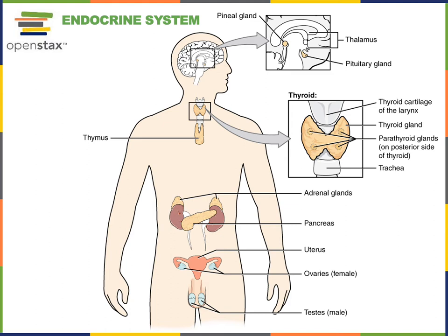Previous videos have covered the hypothalamus, pituitary gland, thyroid, parathyroid glands, and the adrenal glands. This video will focus on the pancreas. The pancreas is located in the epigastric and left hypochondriac regions, just posterior to the stomach and medial to the kidneys.